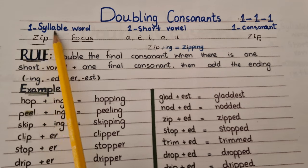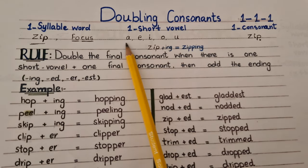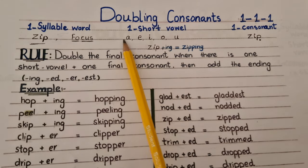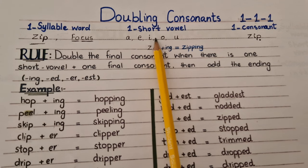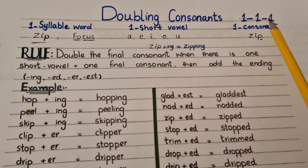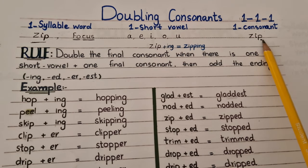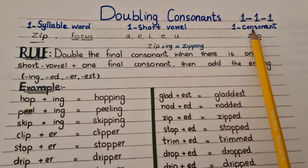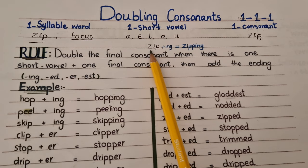If a word has one sound and a short vowel sound — it can be A, E, I, O, or U — those are the short vowel sounds. So if a word has one syllable, one short vowel sound, and one consonant at the end of the word, and if a word follows the 1-1-1 rule, then we will double the final consonant. Just like 'zip' is a one-syllable word.